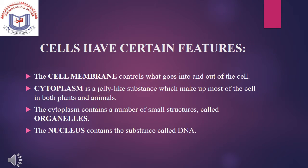The cell membrane controls what goes into and out of the cell. Cytoplasm is a jelly-like substance found in both plant cells and animal cells. Cytoplasm contains a number of small structures called organelles, and the nucleus contains a substance called DNA.